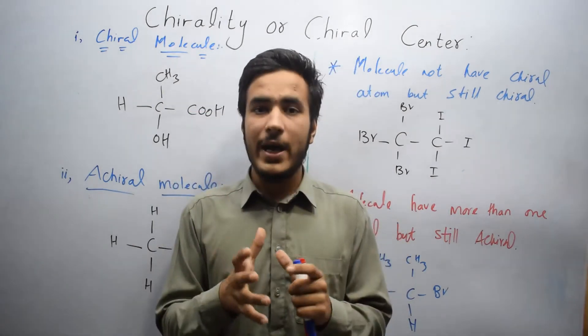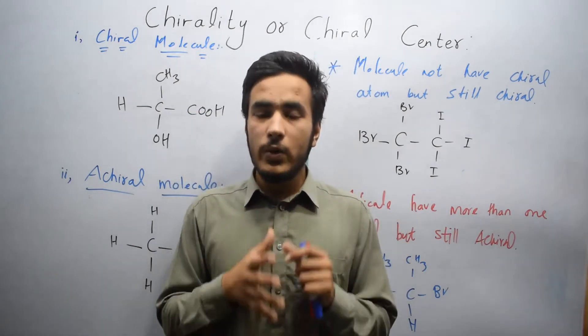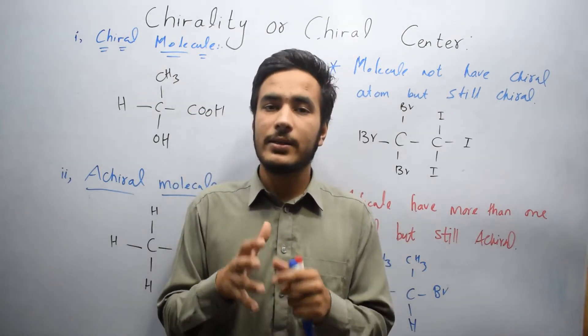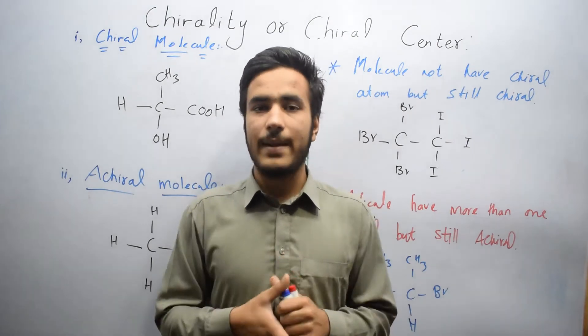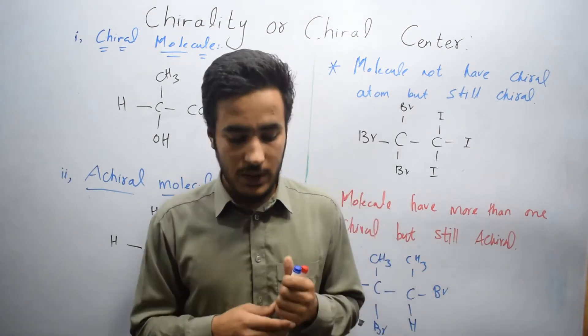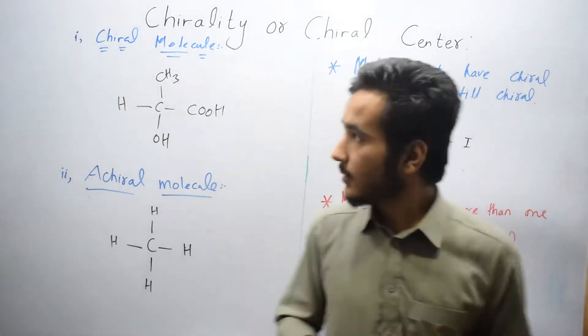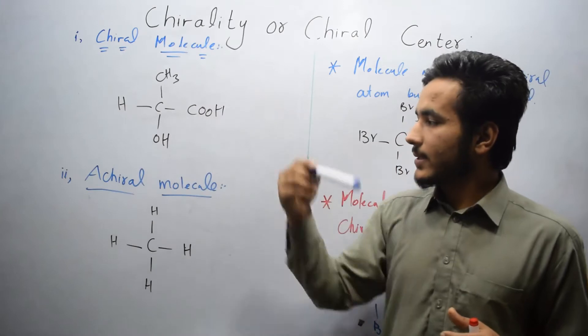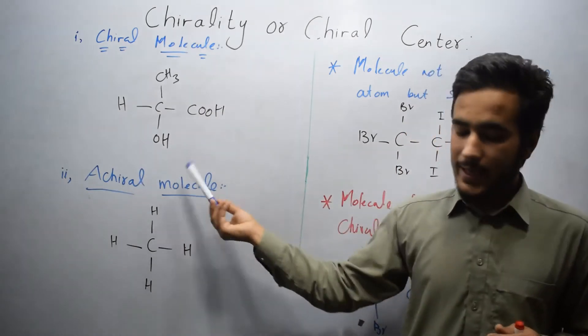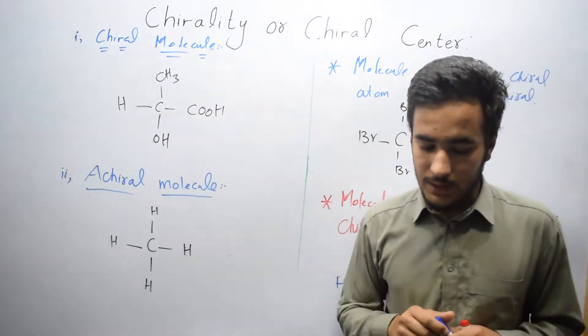On the basis of chirality, molecules are divided into two types: the first is the chiral molecule and the second is the achiral molecule.